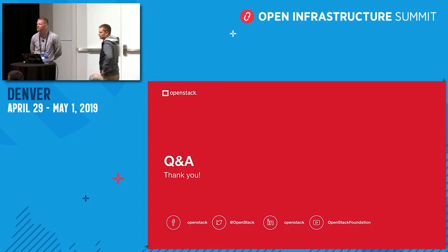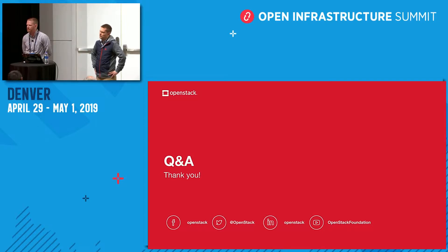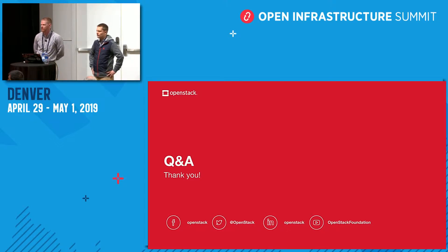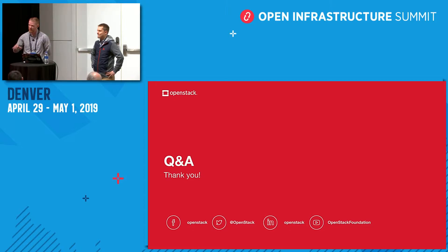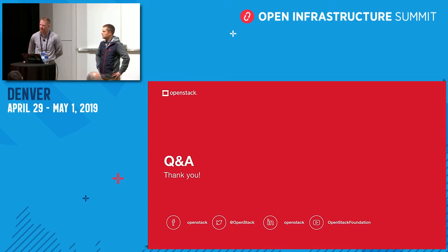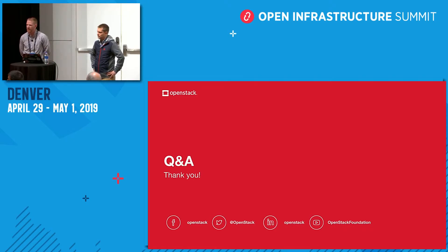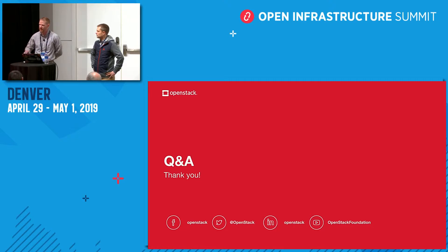Q&A: Is it possible to embed Triple O into an existing OpenStack installation — for example Mitaka — and use it to upgrade to a higher release? It may be possible, but it's not something that's been documented or done officially. The recommended approach is to deploy a fresh OpenStack cloud on new hardware and then manually migrate workloads from the existing installation to the new one.